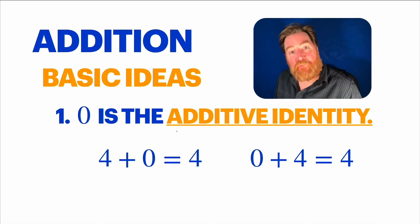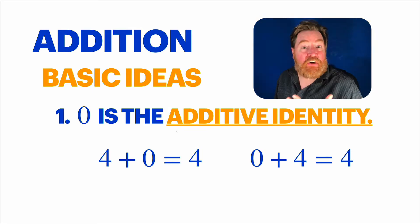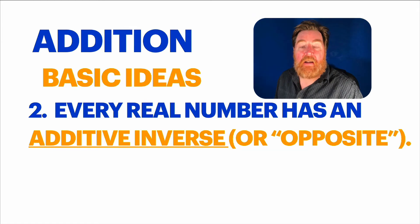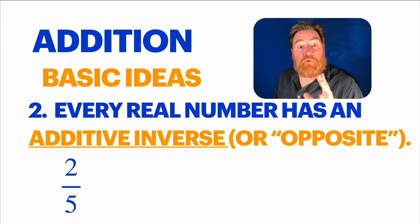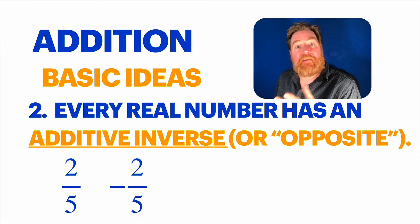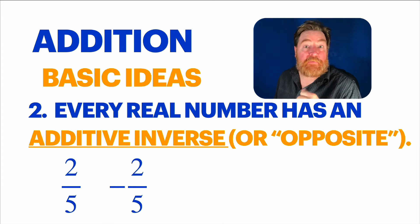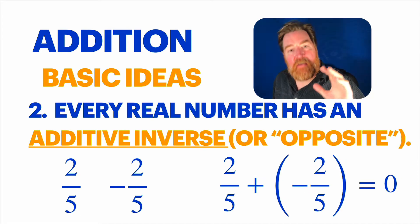So four plus zero is four, or zero plus four is four. It preserves the identity. Zero is that guy. It also turns out that every single real number has an additive inverse, or opposite. For example, the opposite of two-fifths is negative two-fifths. We saw this with the integers before. And when you add a number together with its opposite — total annihilation — you get zero.